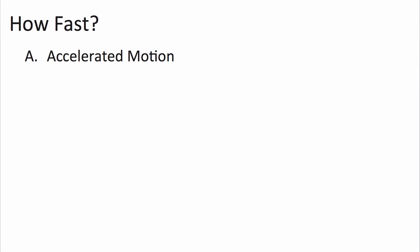Now let's take a look at how fast things are moving at different times. To find this, we have an equation: change in velocity equals acceleration times change in time. Let's say we throw a ball up starting at 40 meters per second — every second it loses 10 meters per second on the way up, and on the way back down it mirrors that. We want to know how fast it's moving at, say, 2.5 seconds.